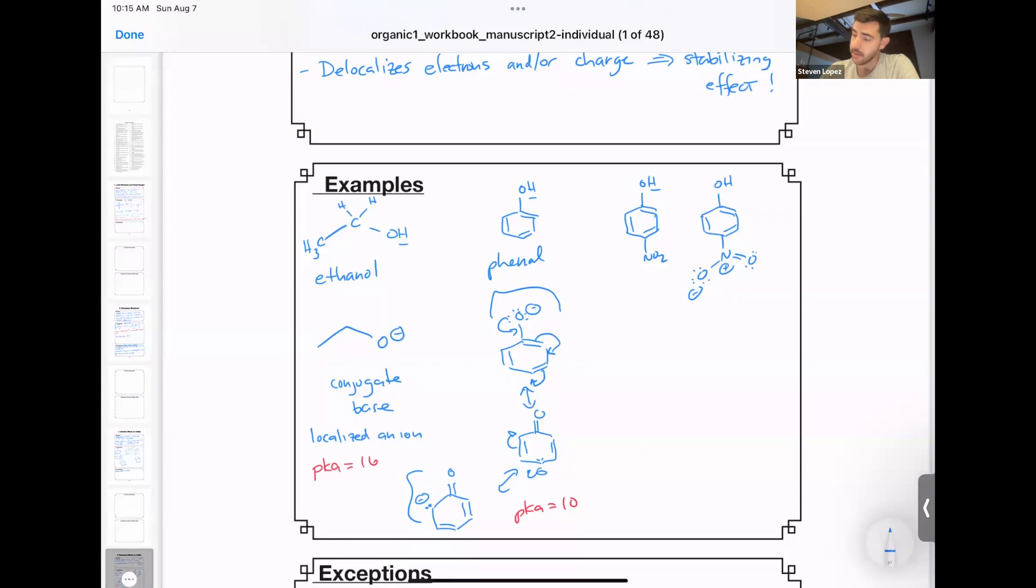We should draw the conjugate base, and then this O minus can then delocalize into the phenol ring and even beyond with the nitro group. Now we have a resonance form that helps to stabilize this negative charge. You have the resonance effects. Think of the nitro group as pulling electron density inductively and also through resonance, as we've just shown in this resonance form.